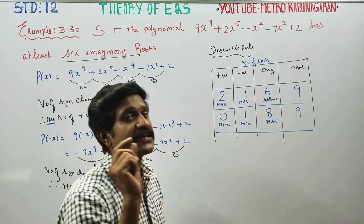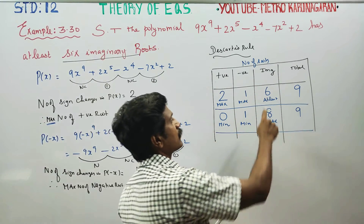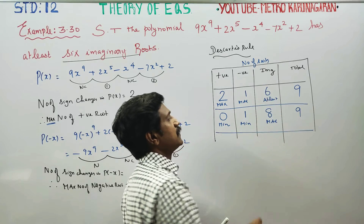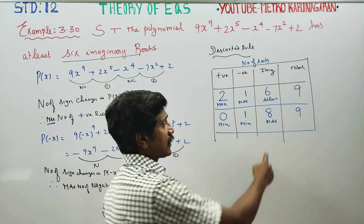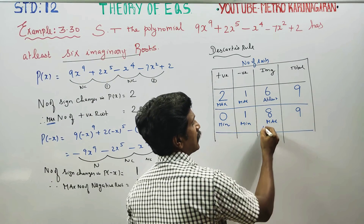That is 'at least.' At least means the minimum guaranteed value. At most means the maximum possible value — here at most 8 imaginary roots. The conclusion is: the polynomial has at least 6 imaginary roots.